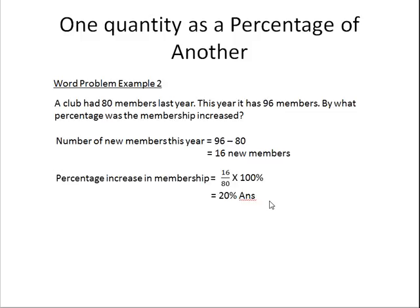So the percentage increase in membership is this difference, which is 16. So 16 divided by 80 — 80 is the membership of last year — multiplied by 100% equals 20%, and this is the answer.